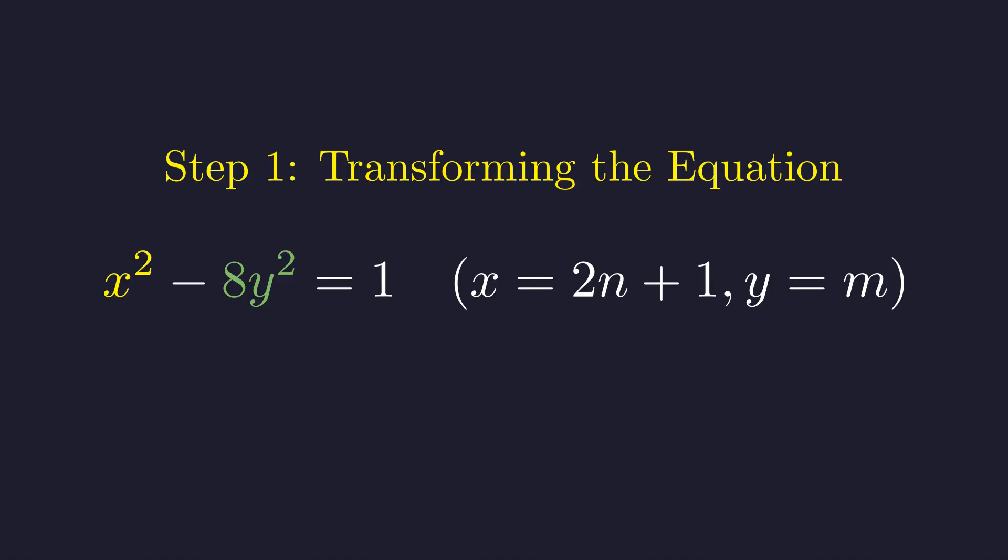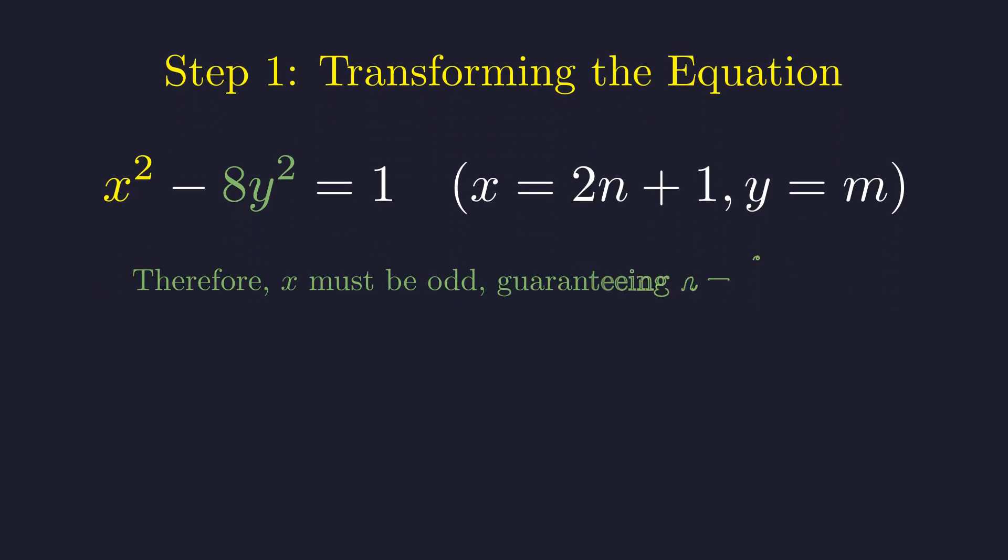Before we solve this, notice a crucial property. If x were even, then x squared would be divisible by 4. Since 8y squared is also divisible by 4, the entire left side would be divisible by 4. But it equals 1, a contradiction. Therefore, x must be odd, which guarantees that n equals x minus 1 over 2 is always an integer. This establishes the exact correspondence between our two problems.